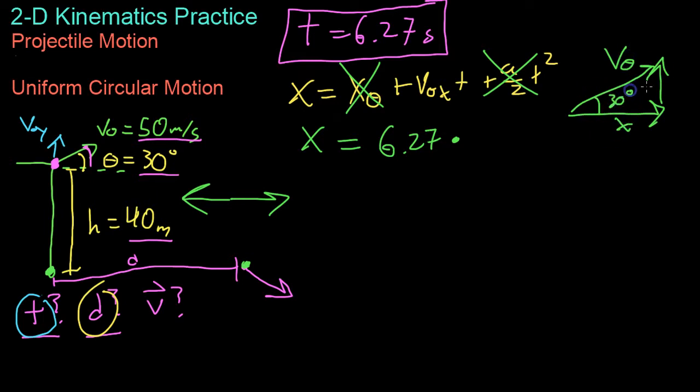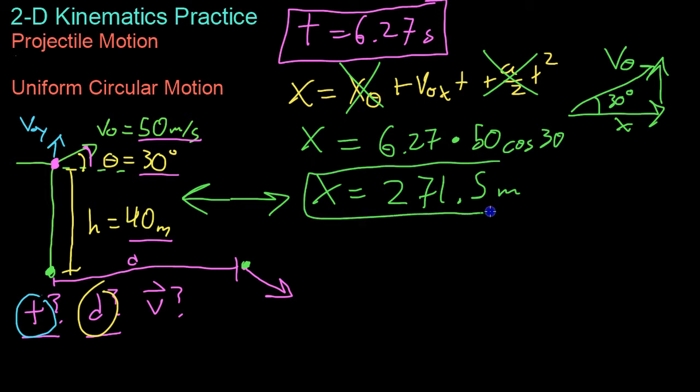And because we have 30, the x component will be v0 times cosine of 30. So v0 is 50 meters per second times the cosine of its launch angle, which is 30 degrees. And writing all that out, you end up with a total distance covered of 271.5 meters or thereabouts.